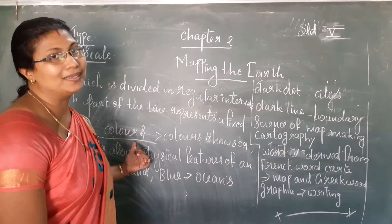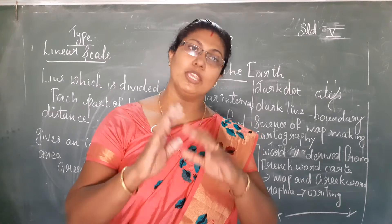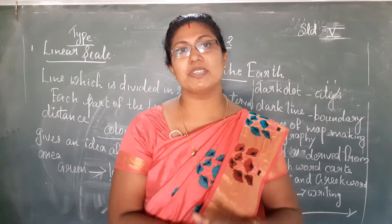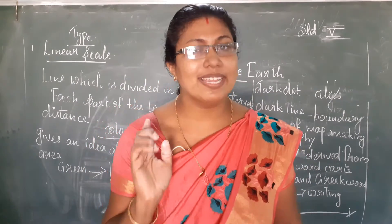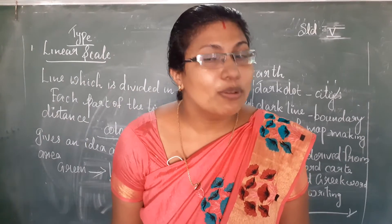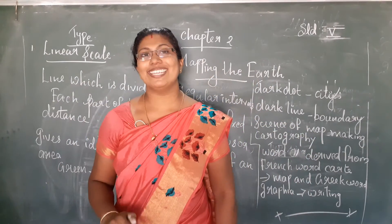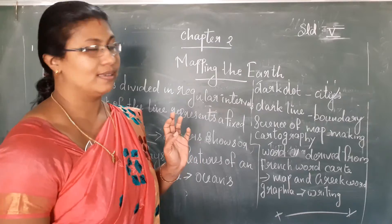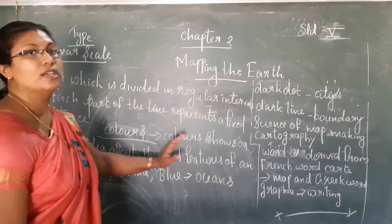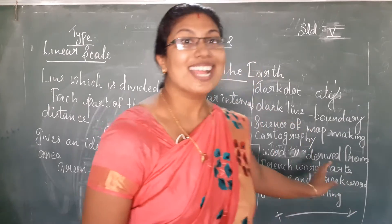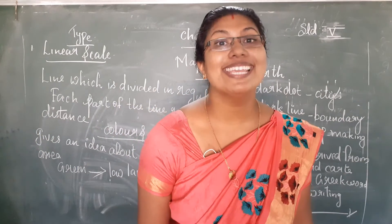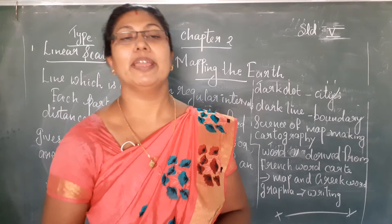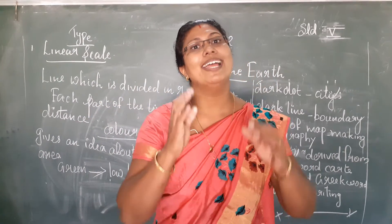The last point of this chapter is colors. When we go through the map and when we go through the globe, we can see different colors. In the first chapter, we went with blue color. My dear children, can you remember — blue color indicates oceans? Likewise, here also we have to deal with some colors. Colors show an idea about the physical features of an area.